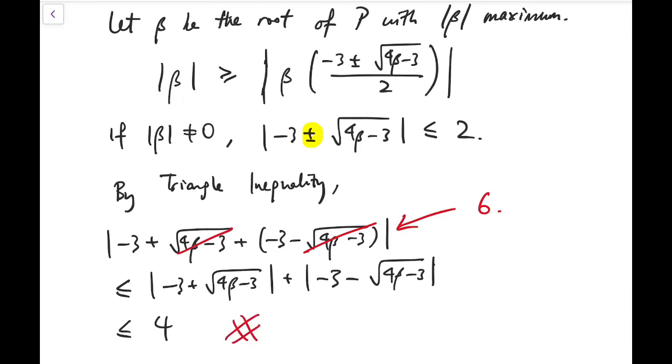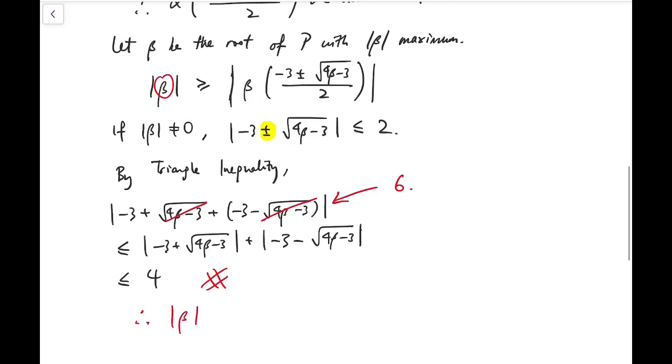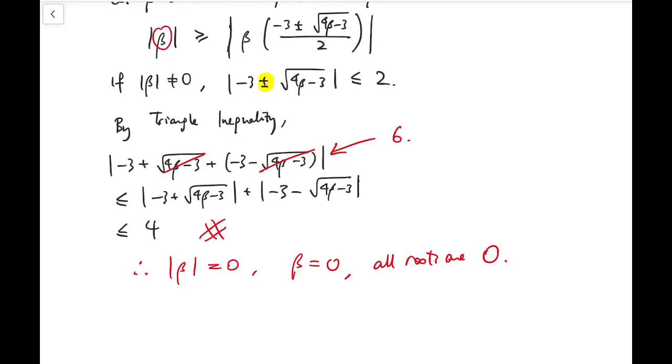Now, this contradiction arises because we have assumed that such β has modulus being non-zero. So, the only thing that could happen is that this β must be zero. Even the root with the maximum modulus is zero, so that means all roots are zero. So, that justifies our claim, is that the only thing that would work are the monomials.